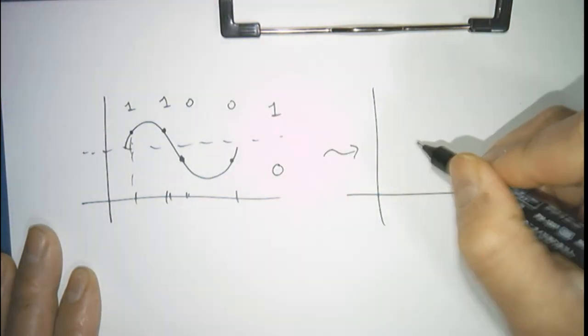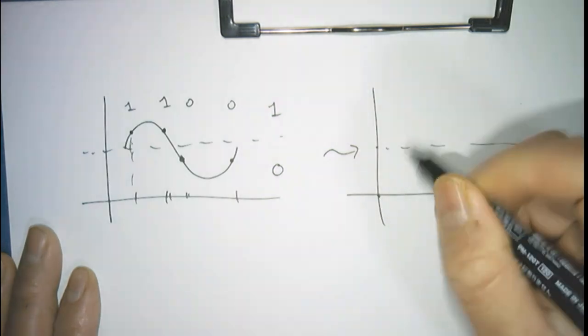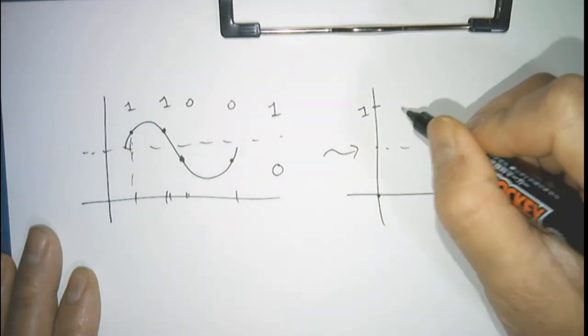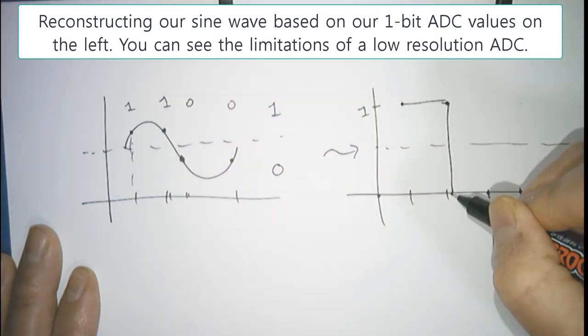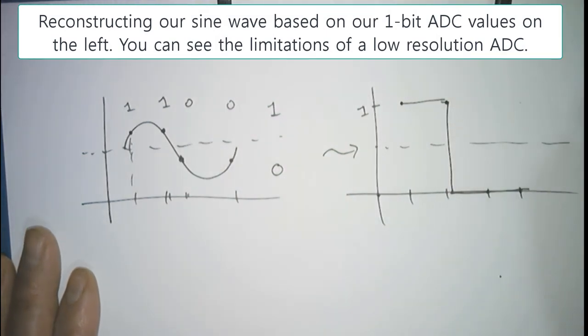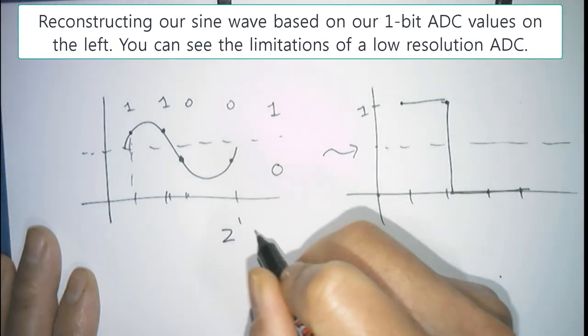It's very low resolution, but a digital reproduction would give us a hint of the original analog sine wave. For a 1-bit ADC, it'll have 2 to the 1 number of levels, or 2 levels. This means it can assume a value of 0 or 1.